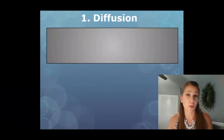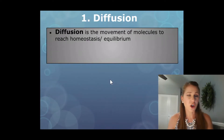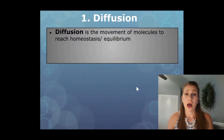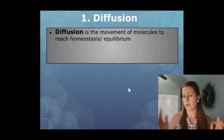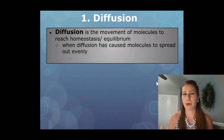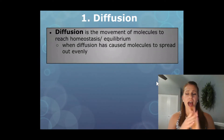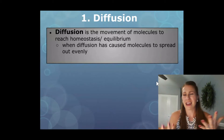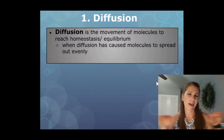The first example of passive transport we're going to talk about today is diffusion. Diffusion is the movement of molecules to reach homeostasis or equilibrium. It's essentially just passive transport, but diffusion is a pretty broad category. Once diffusion has caused molecules to spread out evenly, we can say that equilibrium has been achieved or homeostasis has been achieved, because we've gotten back to that everything-is-normal kind of baseline. Equilibrium is probably the more scientific word, but baseline reminds me that it has to go back to normal.